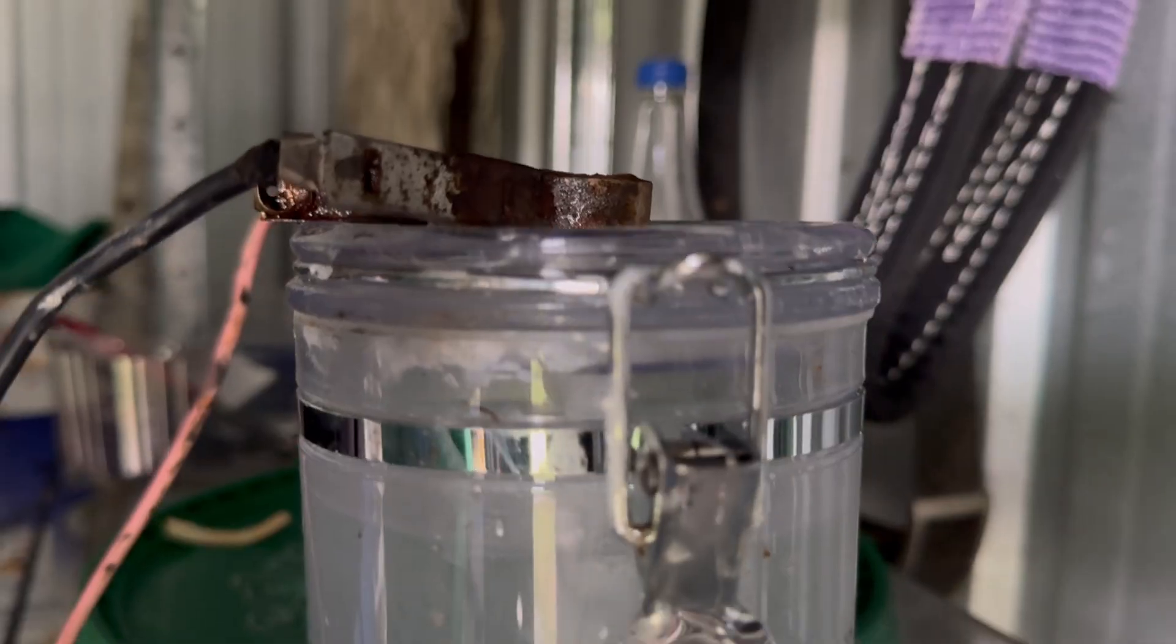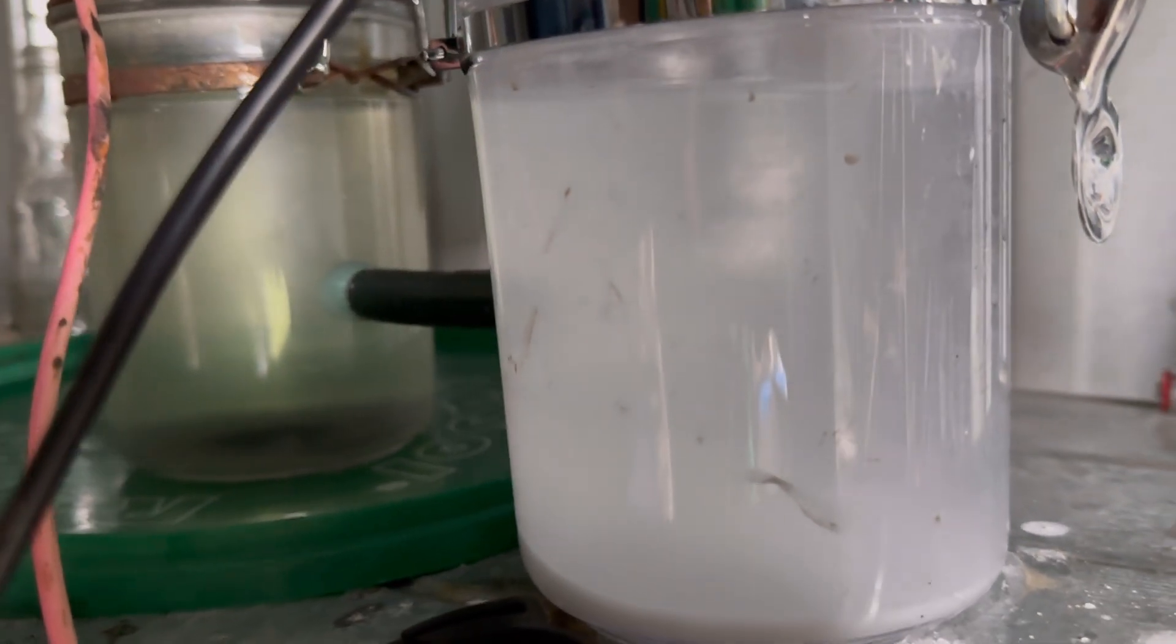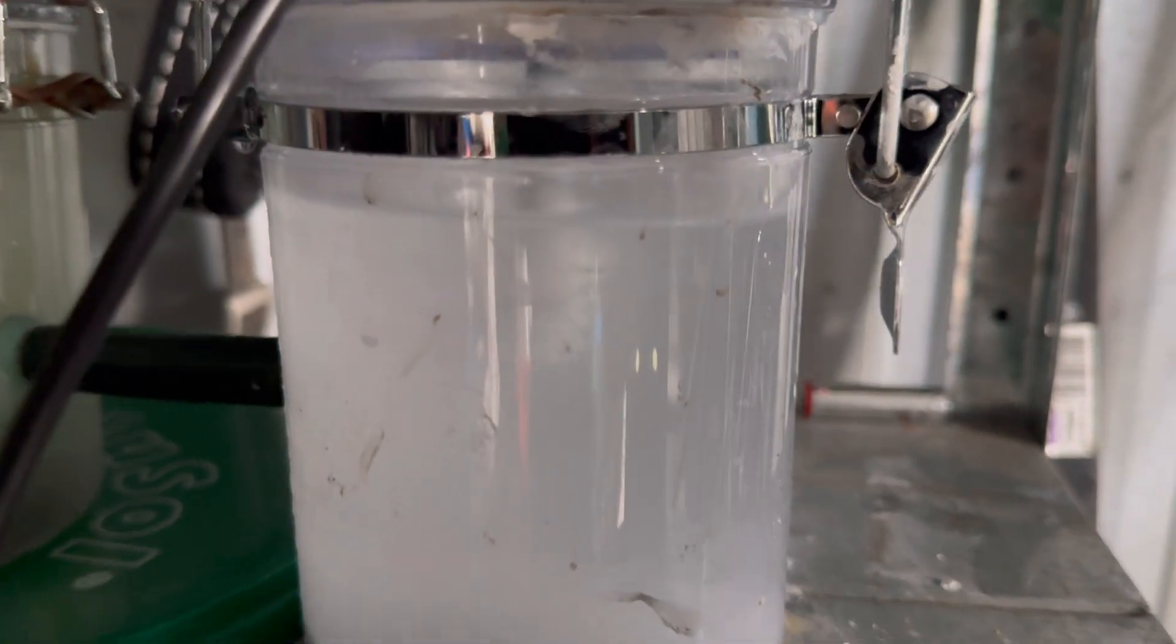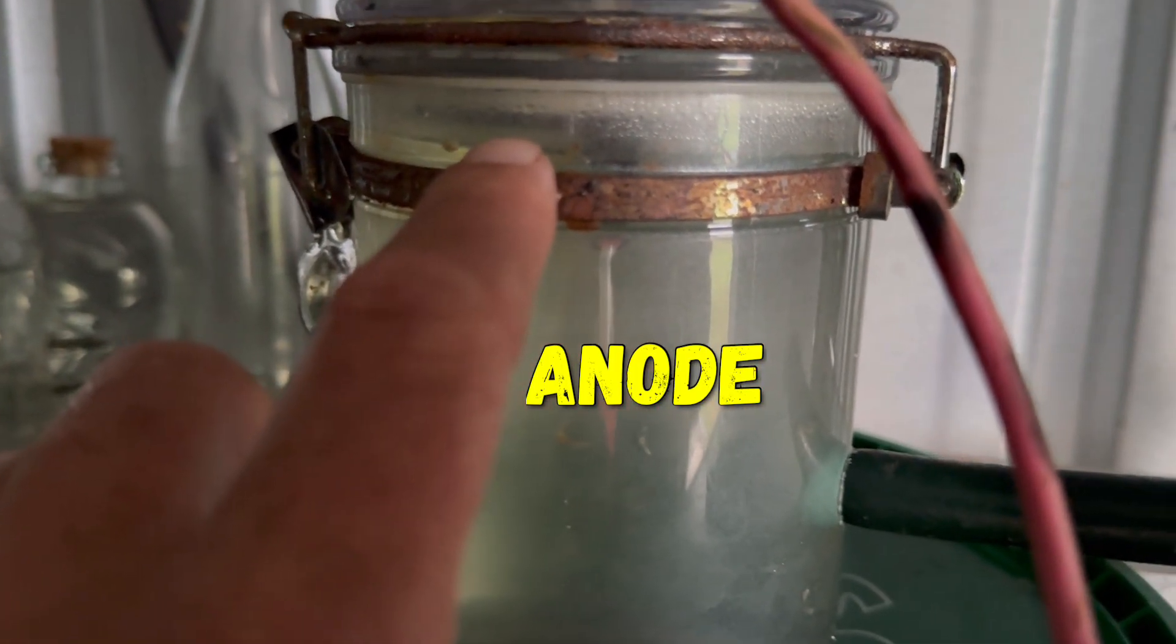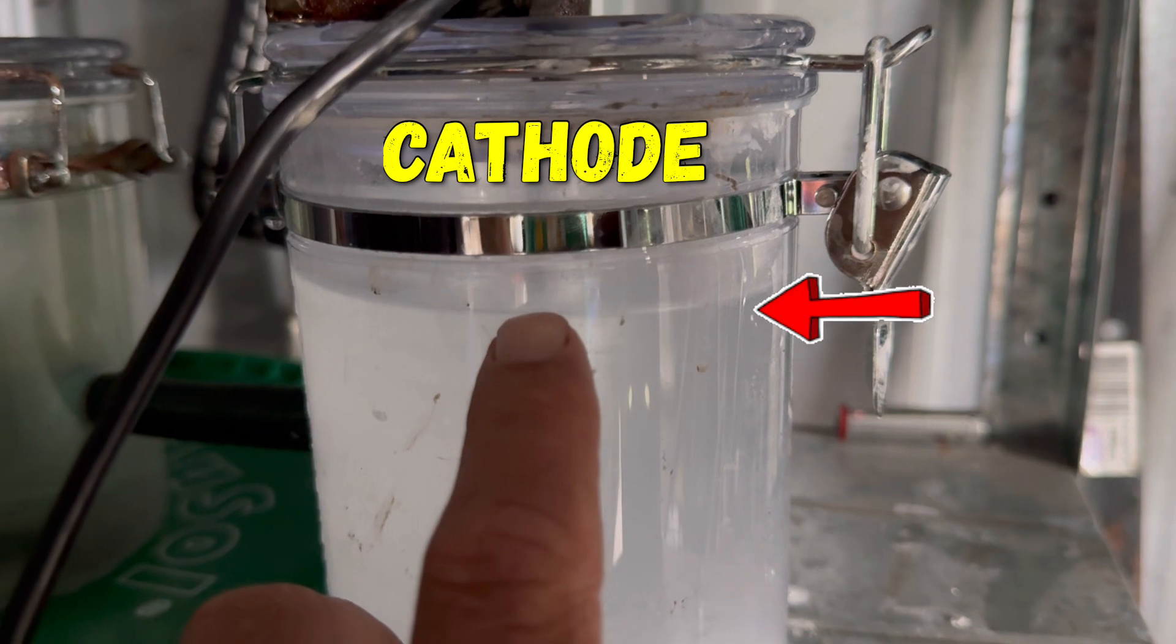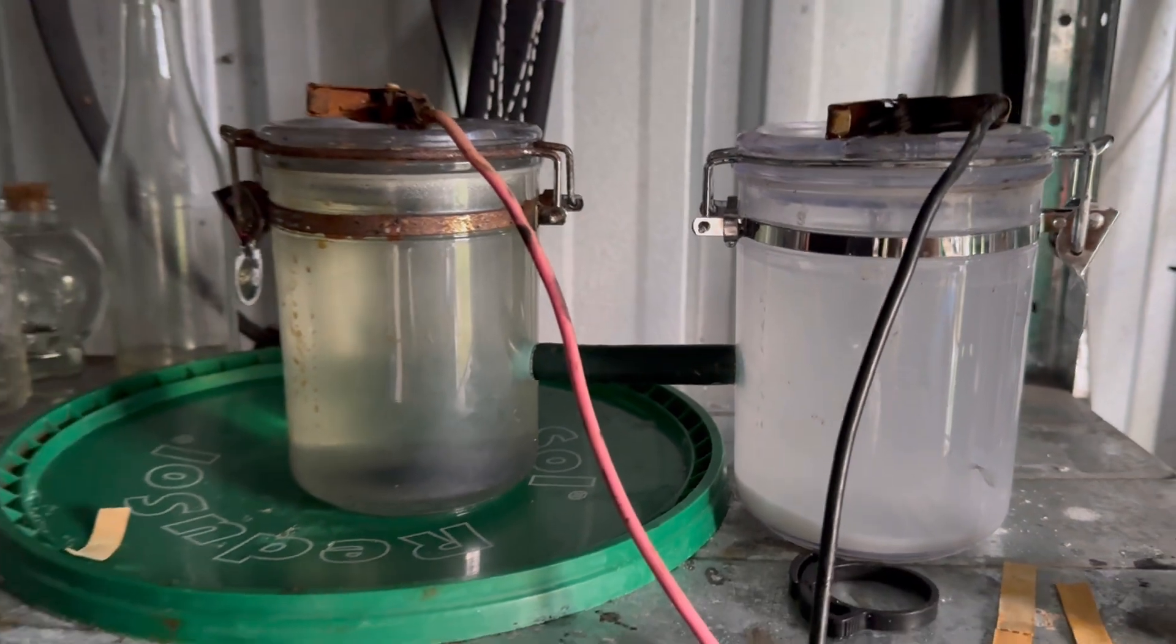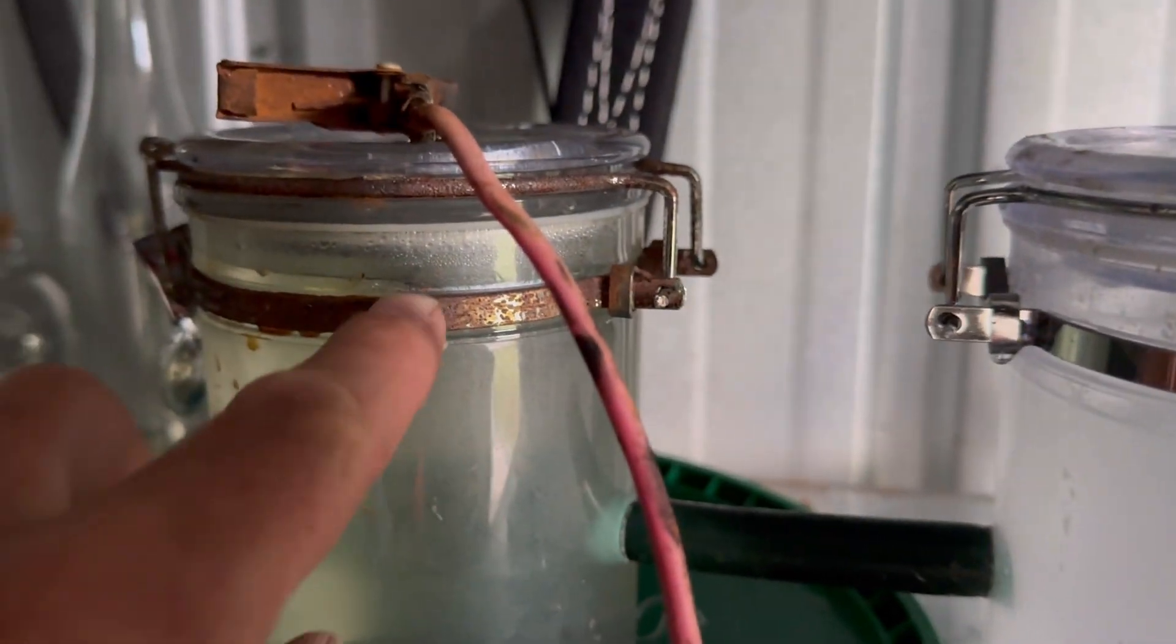I'm using a traditional H-cell: two sealed jars, a salt bridge between them, carbon electrodes, and a 13-volt power supply. One jar is the anode, it produces chlorine. The other is the cathode, it makes sodium hydroxide. I wanted to use the sodium hydroxide for cleaning and soap making, and maybe collect some chlorine for bleach. But then something strange happened and kept happening.